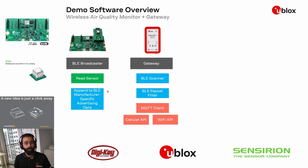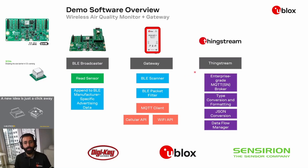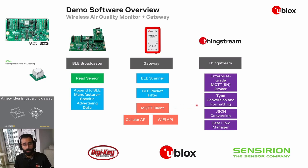We'll utilize Nordic's out-of-the-box examples for broadcasting and scanning, and for the MQTT client and APIs to get data up to the cloud, we'll be leveraging UBXLib. That data will then get sent up to the Ublox ThingStream broker — a complete communication-as-a-service including an enterprise-grade MQTT or MQTT-SN broker for lower data overhead. We can run functions in the cloud, such as type conversion and formatting, converting data to JSON to reduce overhead and lower overall data throughput from the gateway to the cloud.